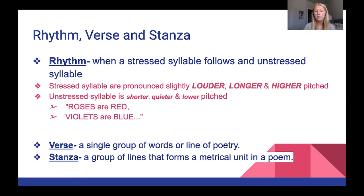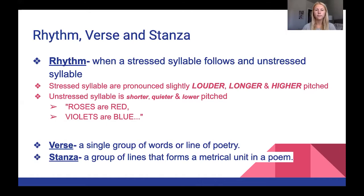An example would be 'roses' being our stressed syllable, 'are' as unstressed, 'red' being stressed, 'violets' stressed, 'are' unstressed, 'blue.' Stressed syllables are slightly louder, normally longer words, and more high pitched than our unstressed syllables. Unstressed syllables are shorter, quieter, and lower pitched. A verse is a simple line and a stanza we would look at as a paragraph within our poem.